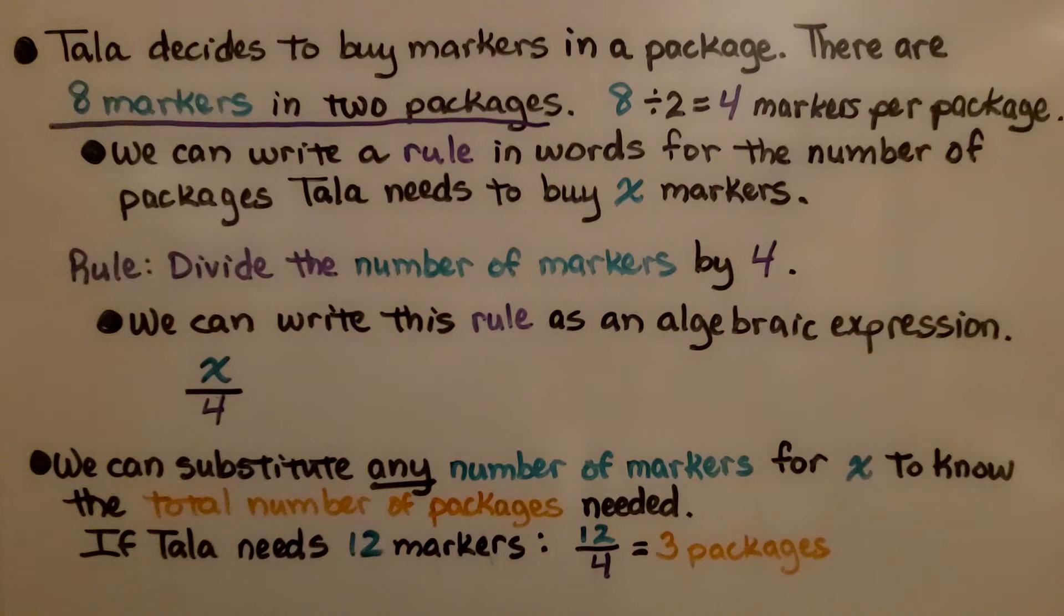So we can substitute any number of markers for x to know the total number of packages needed. If Tala needs 12 markers, she would do 12 divided by 4, and that would be equal to 3 packages that she'd need to buy.